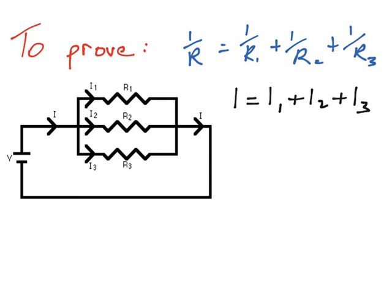So we can change this equation we've been writing. The first I will just be the total voltage divided by the total resistance, equal to the voltage drop across each of the three resistors. That will be the same value across each of them, because for resistors in parallel we have the same voltage drop across all three, so it is still the letter V for each.